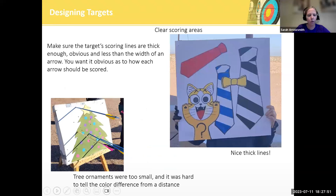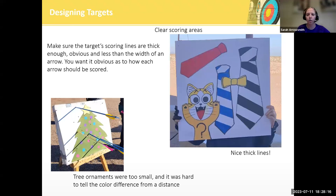After you've painted this really cool target, you want to make sure your target has very clear scoring areas. There's nothing more frustrating than not knowing what to hit, or if you've hit something, having to have a marshal come and make a judgment call. So we want clear scoring areas — usually a nice thick line around each area that's less than the width of your arrow, so you can tell which side your scoring goes on.